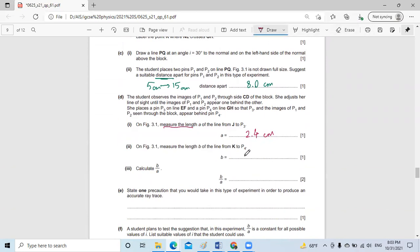Then they ask us to calculate the values of B over A. So we will use the calculator and write 5.4 divided by 2.4. By using the calculator, 5.4 divided by 2.4 equals 2.25, and there is no unit. You can write it as two significant figures, 2.3.